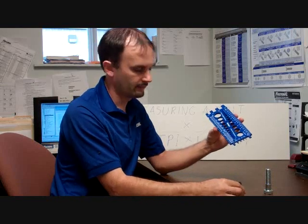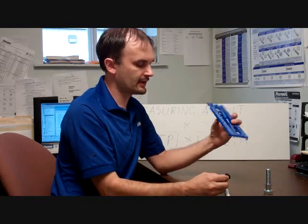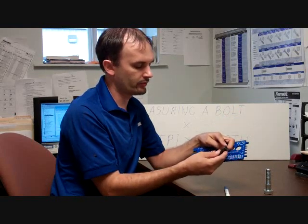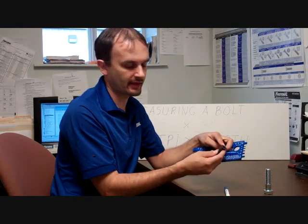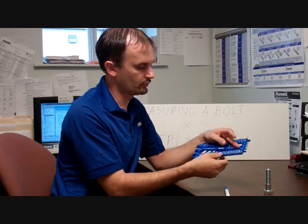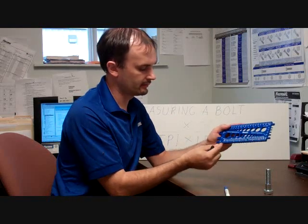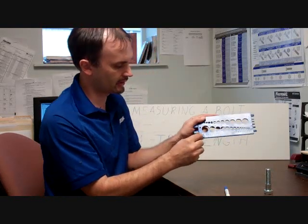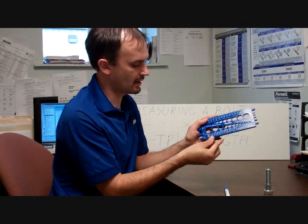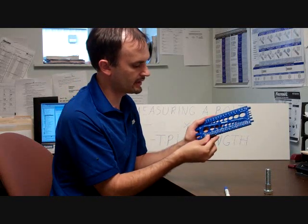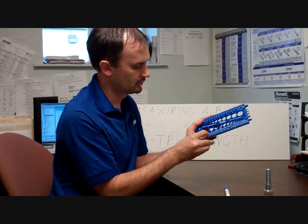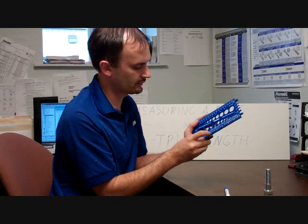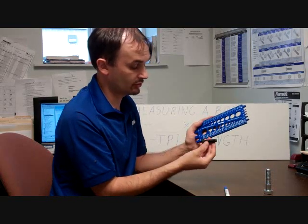We need our length. Now remember that the hex head bolt we measured from under the head. On a flat head bolt, you actually measure from the top of the head. So we're going to use the other side or the other end of our bolt gauge where we have this little notch cut in. And we'll just drop our bolt head right into that notch. Count up here and we get 1 inch, 2 inches. So we have a 2 inch long bolt.